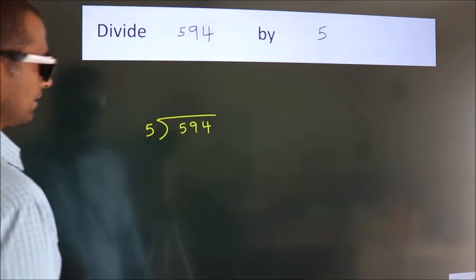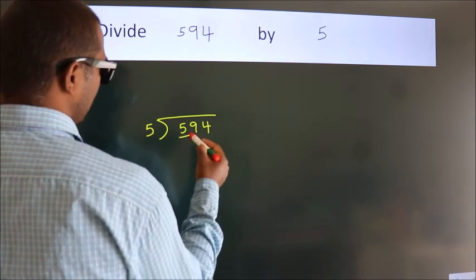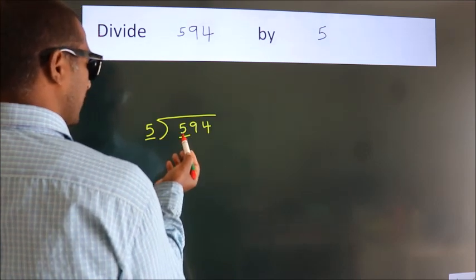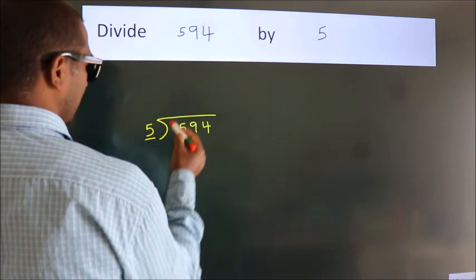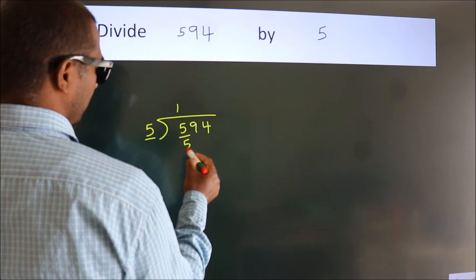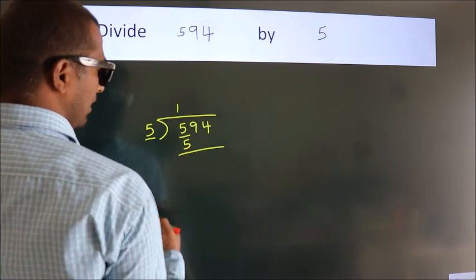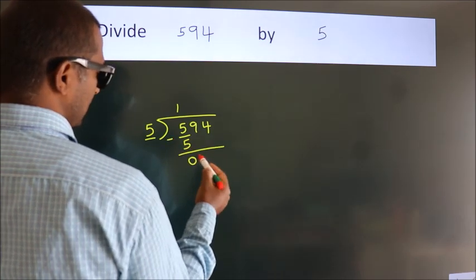Next, here we have 5, here 5. When do we get 5? In the 5 table, 5 once is 5. Now we subtract and we get 0.